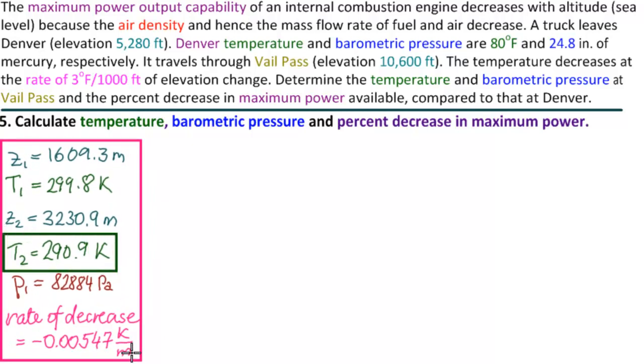We have these results so far including t2 in Kelvin. So the first thing we want to do is make t2 in Celsius and in Fahrenheit. Those are easy conversions so we'll just write down the answers. T2 is 17.8 degrees Celsius which is 64 degrees Fahrenheit. So with that we're done calculating the temperature. This is at Vail.